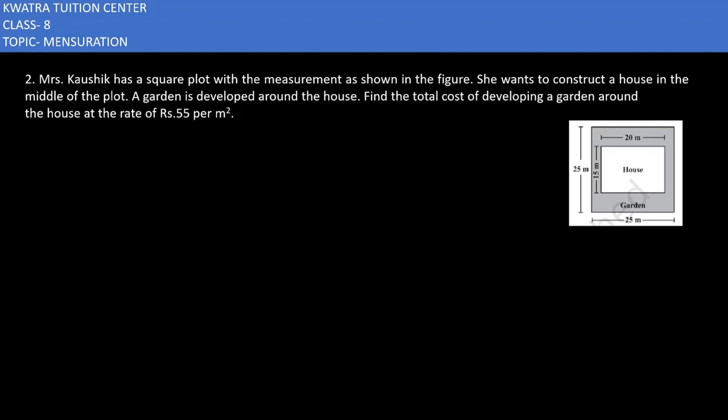Let's start with the second question. It says Mr. and Mrs. Kaushik has a square plot with a measurement as shown in the figure. She wants to construct a house in the middle of the plot. A garden is developed around the house. Find the total cost of developing a garden around the house at the rate of 55 per meter square.